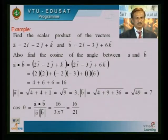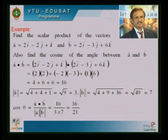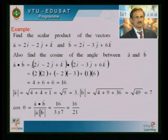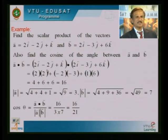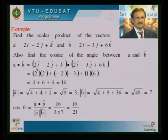Find the scalar product of the vectors: a = 2i − 2j + k and b = 2i − 3j + 6k. Now I want to obtain a·b. How do you obtain it? It is very simple.